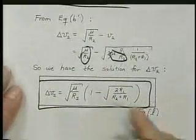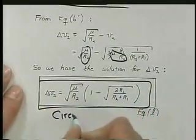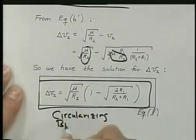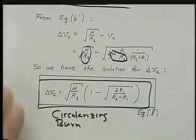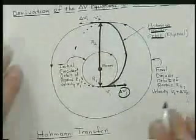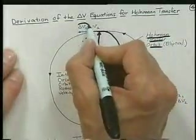This is our circularizing burn to get into orbit R2, not R1. So that, we have just computed what this delta V2 is.